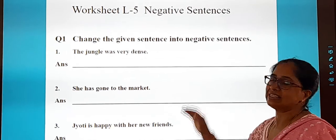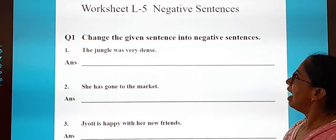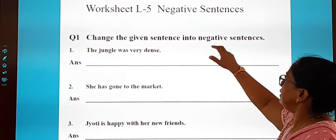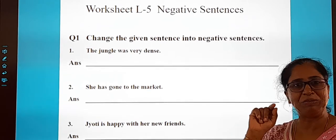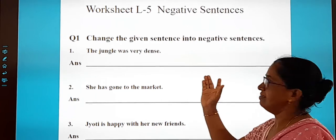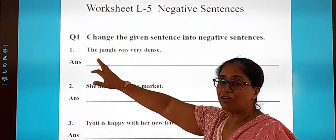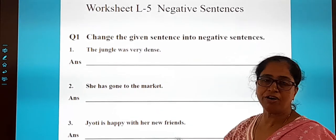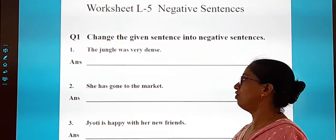Now a little exercise — here is a worksheet. Change the given sentences into negative sentences. After the verb, put 'no' or 'not'. For example: 'The jungle was very dense' — the verb is 'was' — so the answer is 'The jungle was not very dense'.